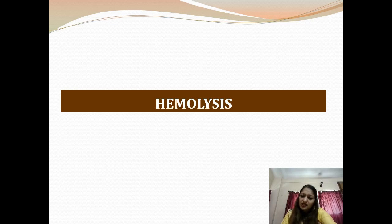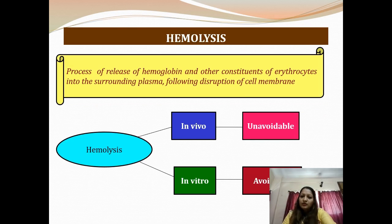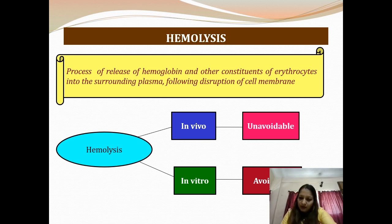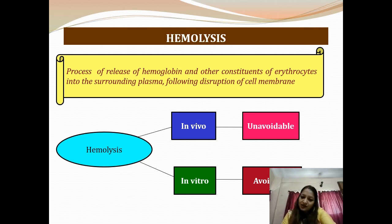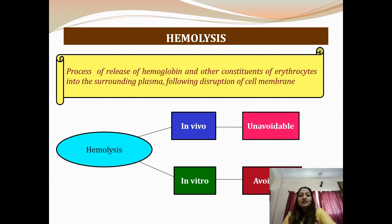Coming to the first and commonest and most problematic source of endogenous interference — hemolysis. Hemolysis is a process of release of hemoglobin and other constituents of erythrocytes into the surrounding plasma, following disruption of the erythrocyte cell membrane. It may be of two types: in vivo, which is unavoidable, or in vitro, which is avoidable. In vivo means this is taking place inside the human body as a result of some pathology and is part of a disease process. In vitro hemolysis involves rupture of RBCs after collection of blood and is very much avoidable.